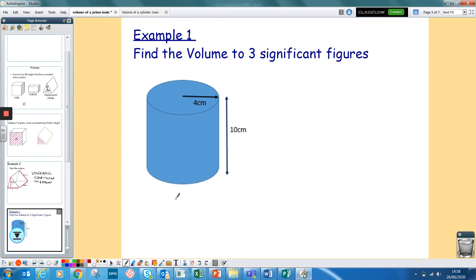This is also, normally I do this on a separate lesson, but this is also a prism. But we don't normally call it a prism, we call it a cylinder. But it's the same concept. This cross-sectional area here is a circle, and it's the same all the way through.